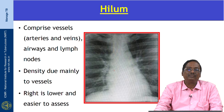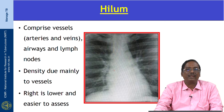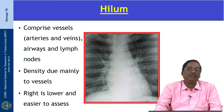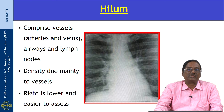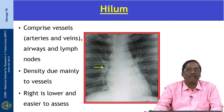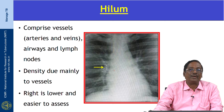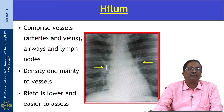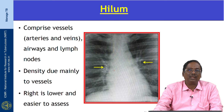Next is the hilum, which comprises vessels — arteries and veins — airways, and lymph nodes. The density of the hilum is mainly due to the vessels. It is a V-shaped structure. The upper limb of the V is formed by the superior pulmonary vein and the inferior limb is formed by the descending pulmonary artery; both intersect at the hilar point. The right hilum is slightly lower than the left. Any distortion of the hilum indicates pathology in the gland.